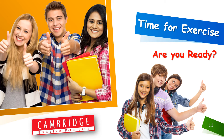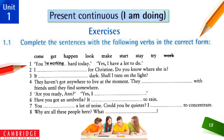Students, you have learned the lesson. Now it's time for exercises — are you ready? The exercises are simple, not too difficult. Exercise 1.1: complete the sentences with the following verbs in the correct form — come, get, happen, look, make, start, stay, try. The first sentence has been done for you: 'You're working hard today — yes, I have a lot to do.' You need to write in Present Continuous Tense using these verbs, choosing the appropriate one for each sentence.